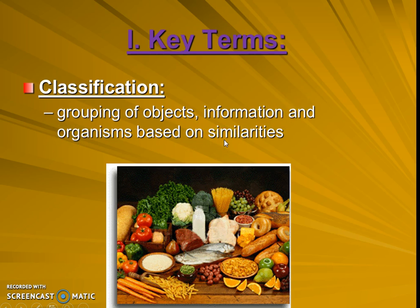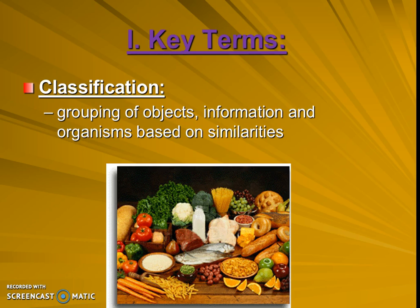We've done this throughout the year thinking about food. We've grouped things into categories like carbohydrates. We also know that even though we have these scientific categories, there are even categories that we don't talk about. We could categorize things based on color or appearance in a picture and so forth. Classification is all about grouping different objects, and you're going to get plenty of practice with this in class.